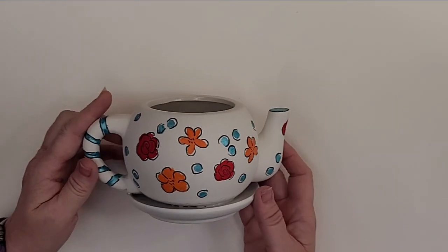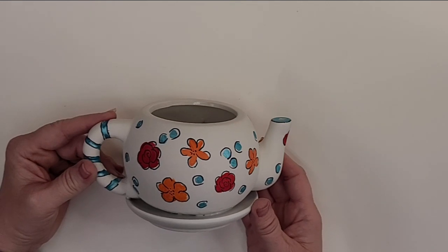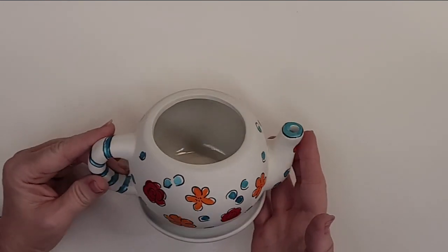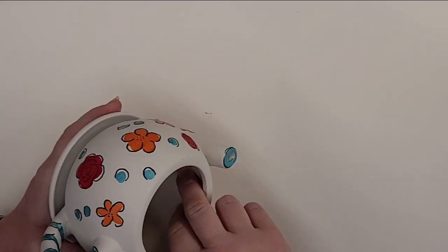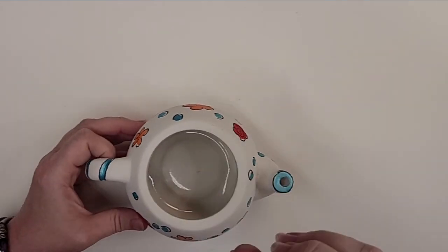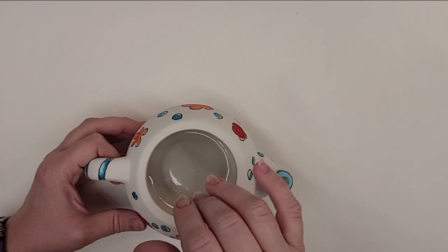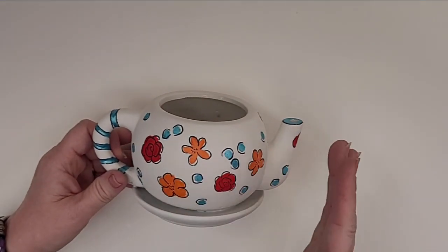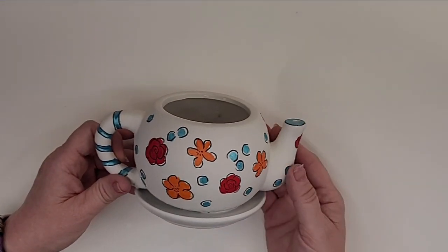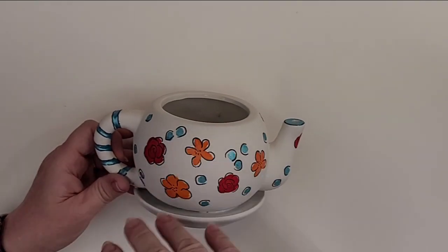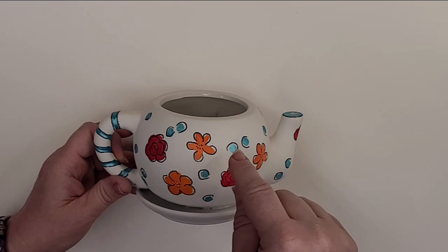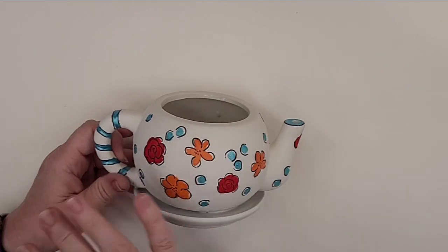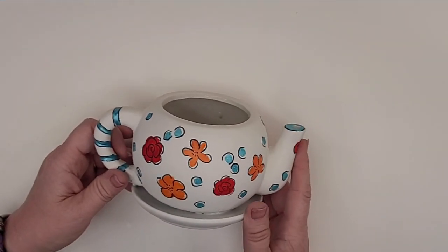So what we're making today is this adorable little flower pot shaped like a teapot, but it's a planter. The inside is glazed so that you don't have to worry about putting dirt and water in there. And it's just painted with these little flowers. Now you can paint whatever designs you want. I've chosen to do flowers and dots. You can do stripes and zigzags or whatever design you want to paint. You'll get enough paint to do a lot of different designs on this.